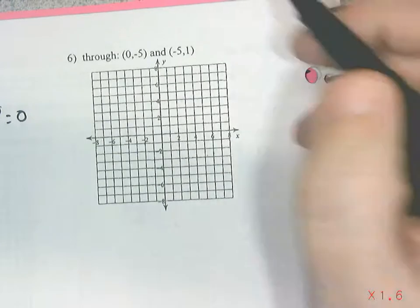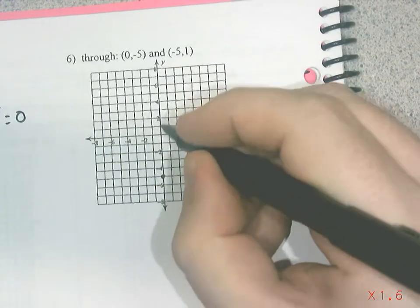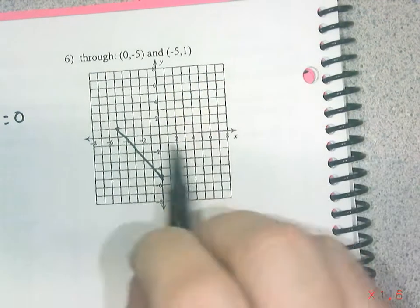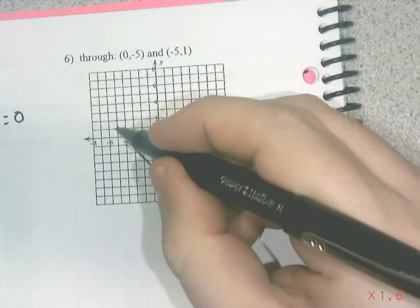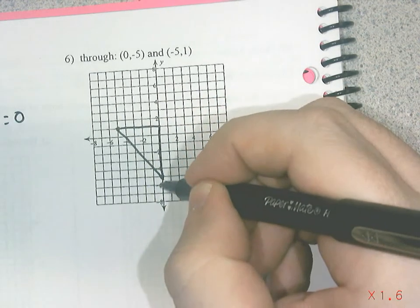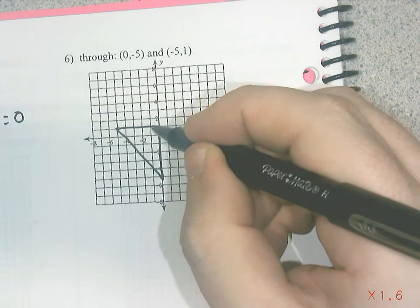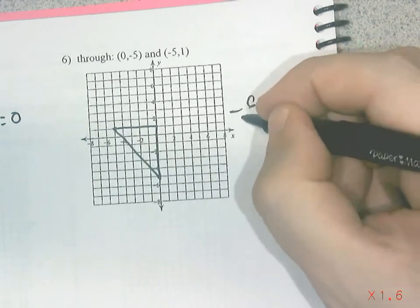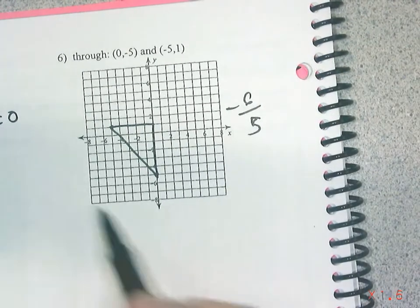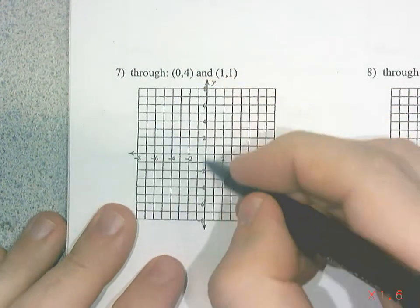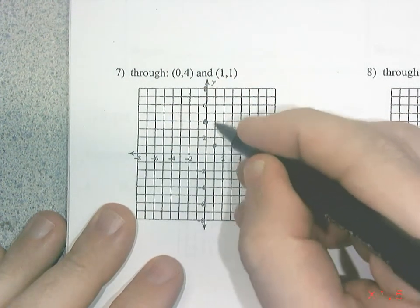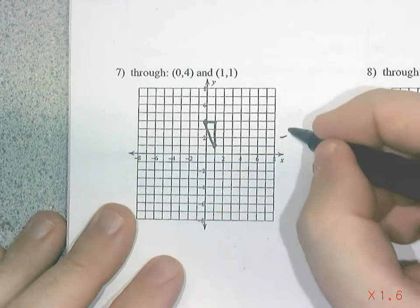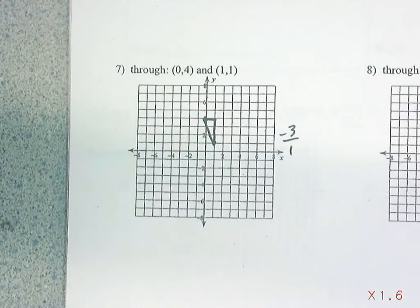Using a graph again — if given two points, zero negative 5 goes down here and negative 5 and 1 goes there. Now I build the stair: rise is 6, run is 5, so the slope is negative 6 over 5. One more: zero 4 and one 1 — plot those, build the stair, it goes down 3 over 1, so the slope is negative 3 over 1.